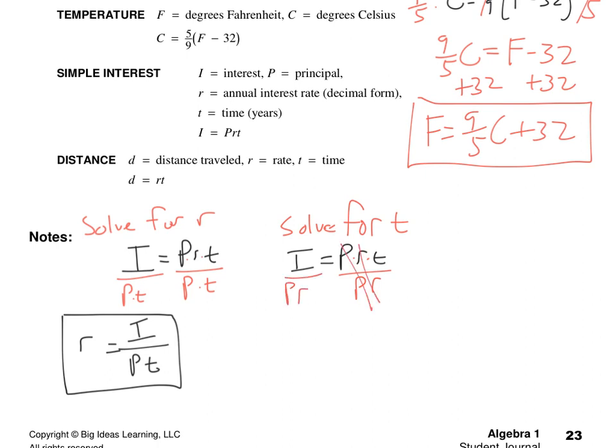And that will cancel out the P and the R. Just like here, the P and the T canceled out because they make 1. And that leaves us with, on the right side, we have I over PR. And that's equal to T. I'm going to flip it around and put the T on the left. There you go. There's a formula for T.